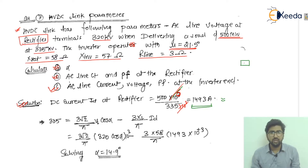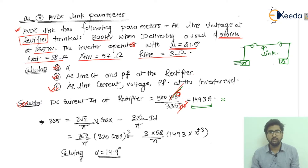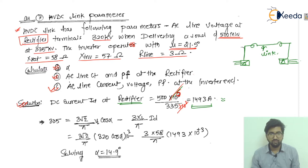This is the DC link current. As you know, there are rectifiers and an inverter with a smoothing reactor between them. This is a three-phase DC link. So DC current ID at the rectifier is 1493 amperes.